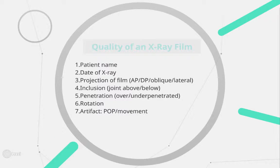Firstly, assess the quality of the x-ray. The most important part of being able to correctly diagnose a foot and ankle fracture is being able to interpret the x-ray. Like all x-rays, you must first consider the quality. This includes checking that this is the correct patient, checking the date it was taken, asking what type of projection it is, making sure that the appropriate anatomy is included, looking if it is under or over-penetrated, checking for rotation, and lastly, if there is any artifact that should not be there.